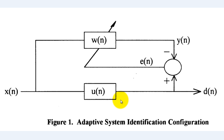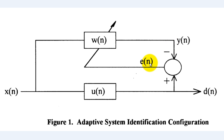In this tutorial we will only discuss adaptive system identification configuration. This configuration is primarily responsible for determining the transfer function of an unknown system. The same input Xn is applied to both the unknown system and the adaptive filter, and their outputs are compared. The resultant difference produces an error that adjusts the adaptive weights. After enough iterations, the adaptive filter transfer function will converge to or near the unknown system transfer function.